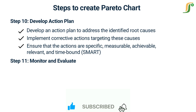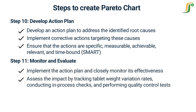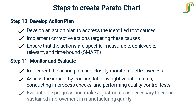Step 11 — Monitor and evaluate: implement the action plan and closely monitor its effectiveness. Continuously assess the impact by tracking tablet weight variation rates, conducting in-process checks, and performing quality control tests. Evaluate the progress and make adjustments as necessary to ensure sustained improvement. By following these 11 steps, you can effectively utilize the Pareto chart for root cause analysis of manufacturing errors, leading to targeted interventions and improved product quality and consistency.